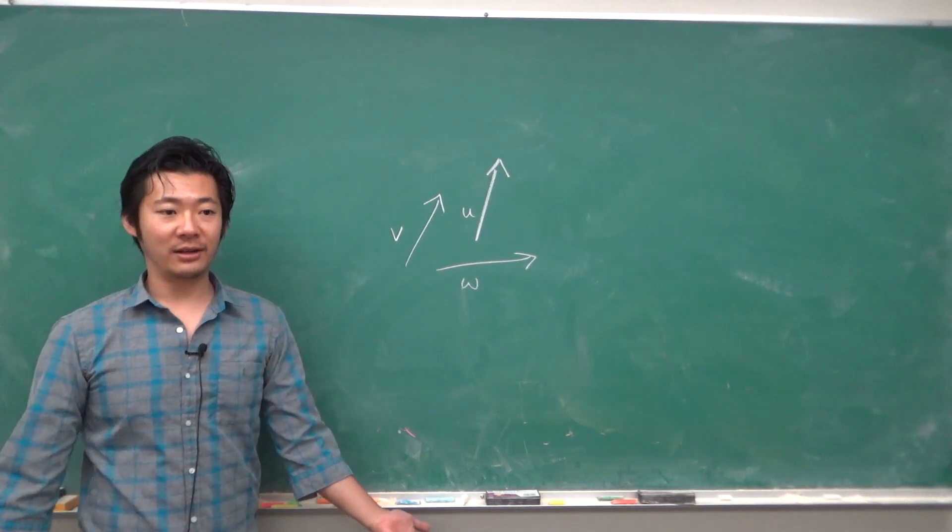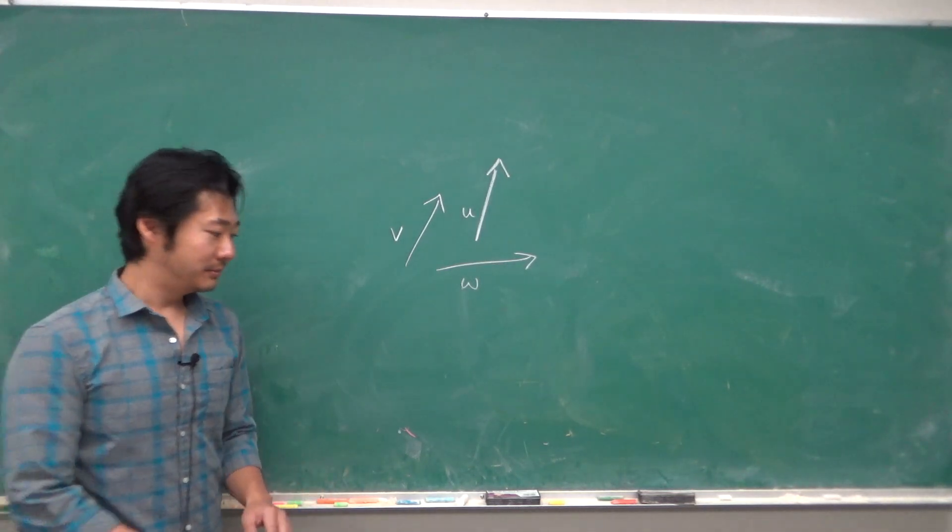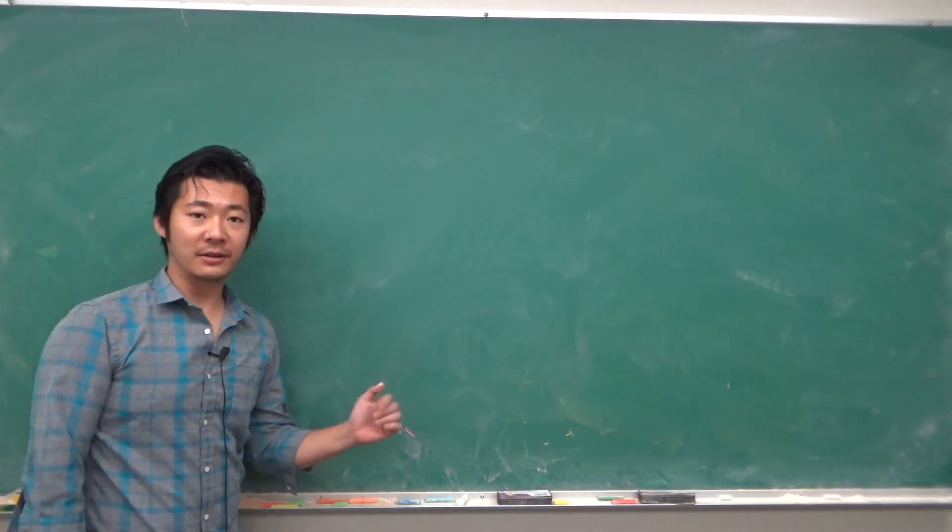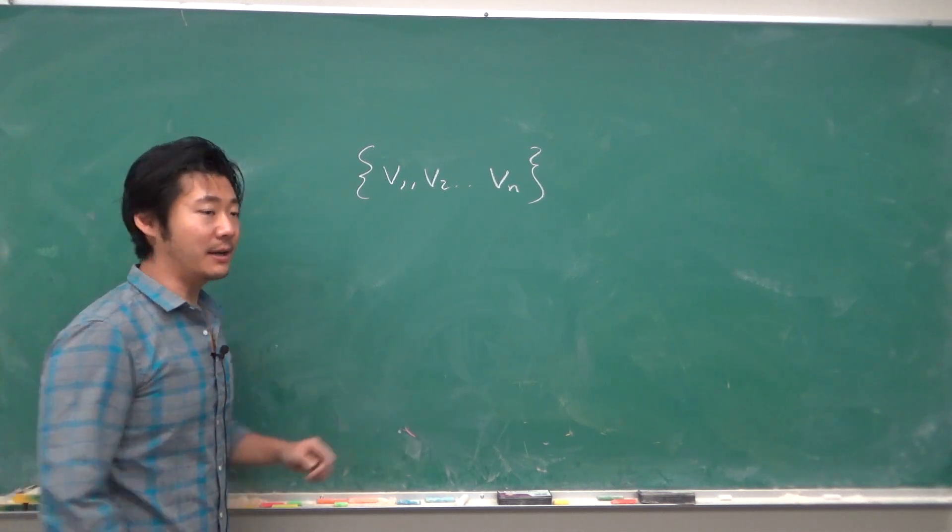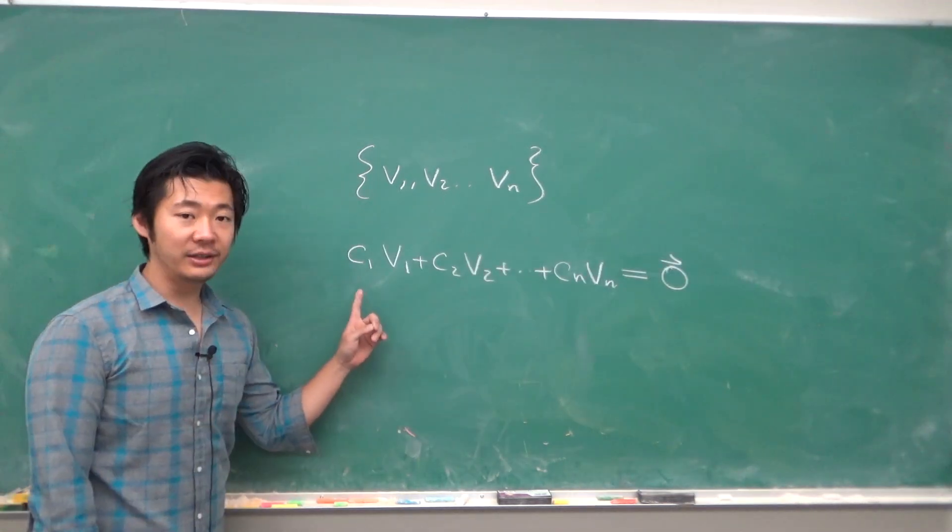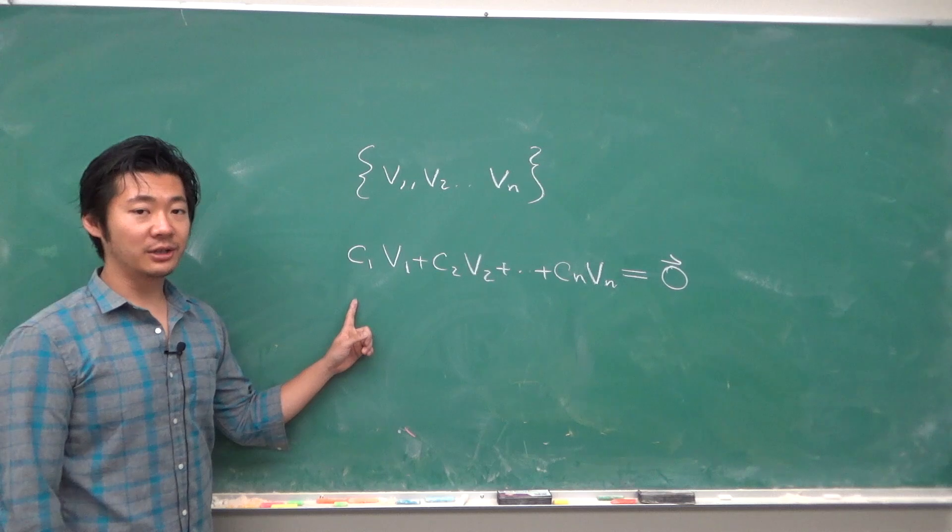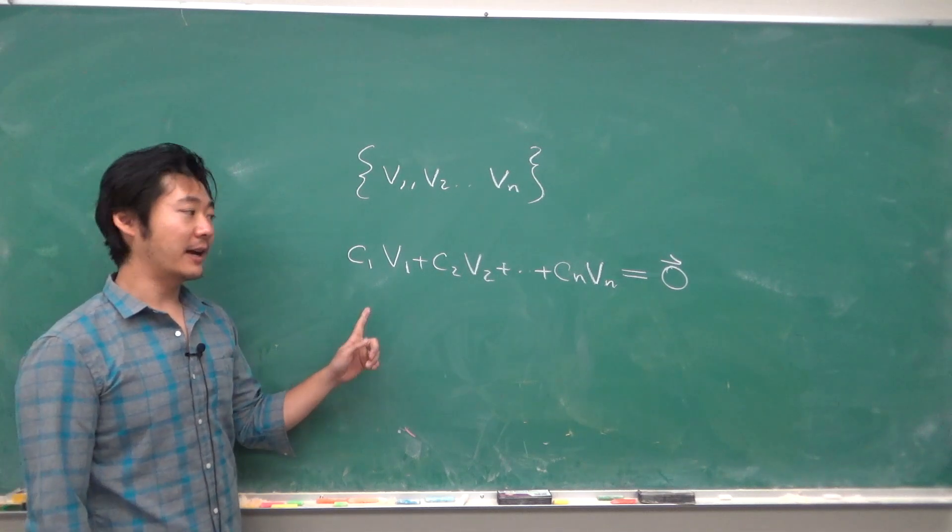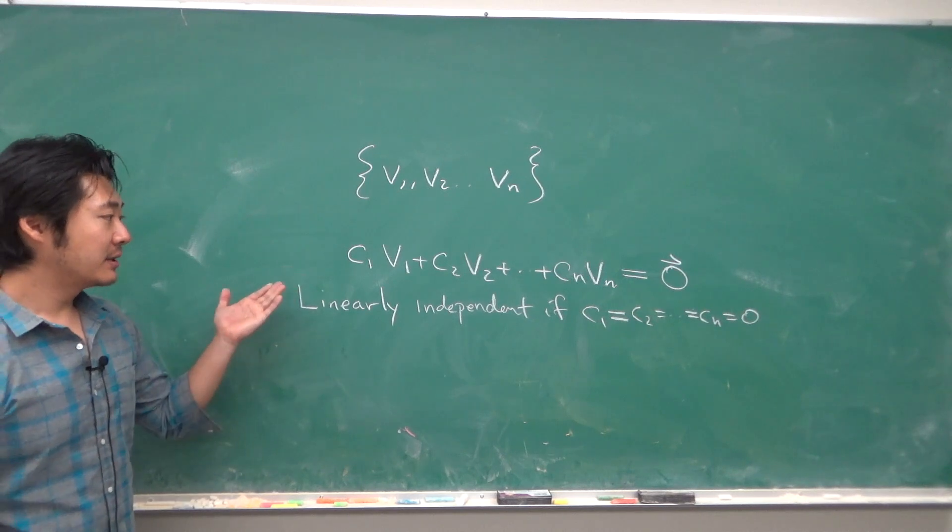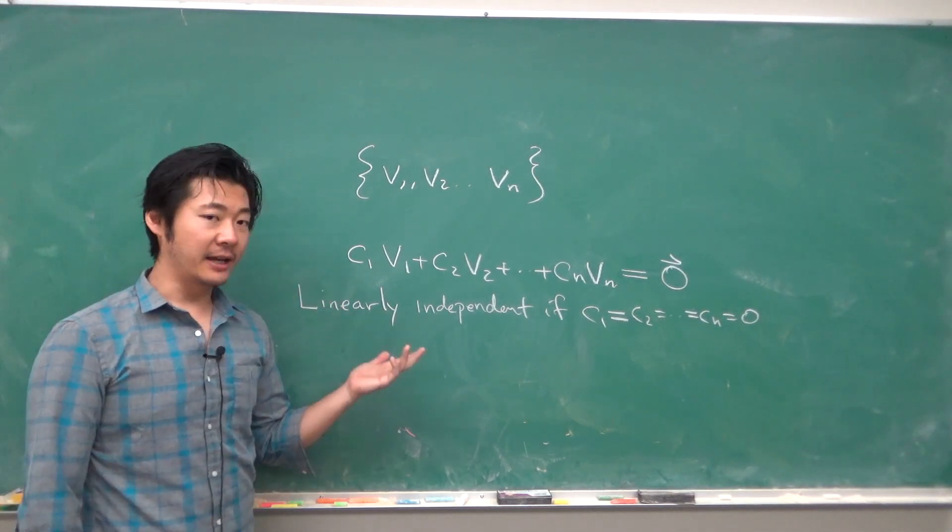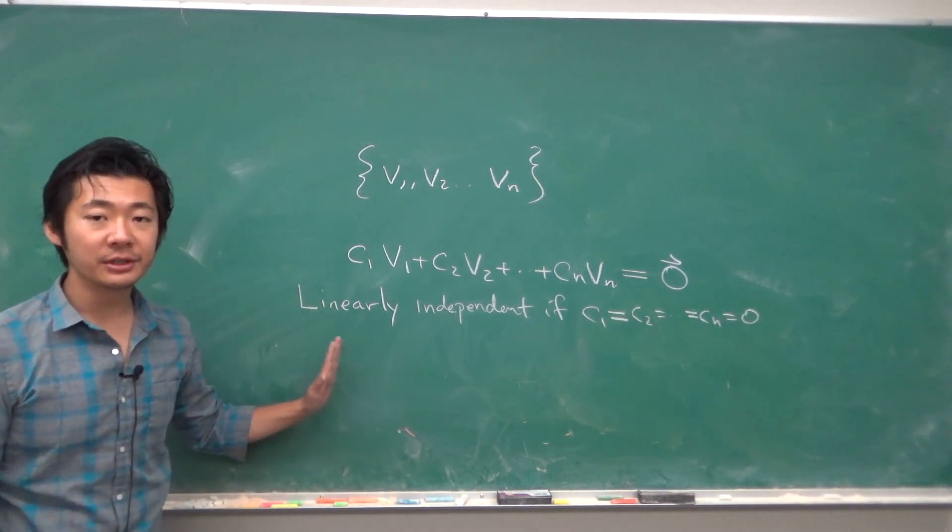Recall that given a set of vectors, their linear combination is just their weighted sum. They are linearly independent if the only solution to this equation is that c1 to cn are all zeros. If we can find some c1 to cn such that they are not all zeros, then that means they are linearly dependent.